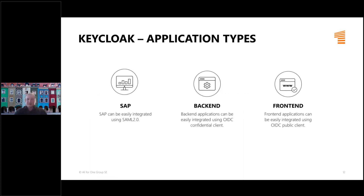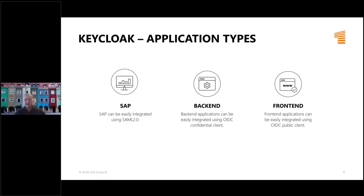Basically, all web applications you can think of can be integrated with Keycloak — SAP being the most important type for our company. You can integrate applications that use SAML or OpenID Connect protocols to authenticate and authorize. Both allow authenticating users and sending user data from the identity provider to an application. SAML is a bit older, uses XML to communicate, and is more secure but slightly less performant.